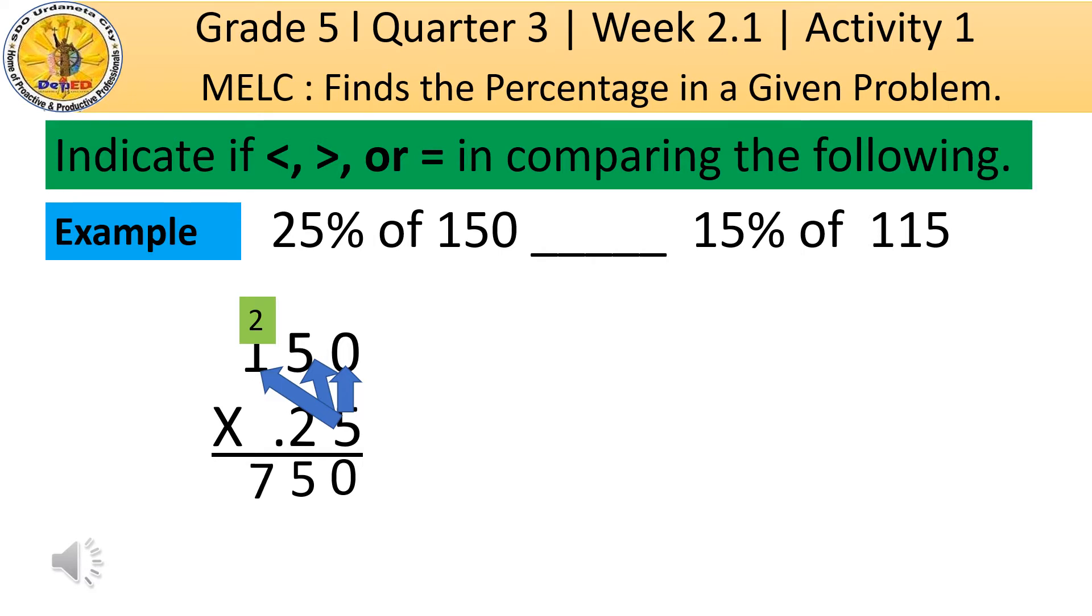Then, the next thing to do, the second digit of multiplier, which is 2. So, 2 times 0 is equal to 0. Then, 2 times 5 is equal to 10. Then, group 1 to the last upper digit of multiplicand. Then, 2 times 1 is 2, plus 1 is equal to 3.